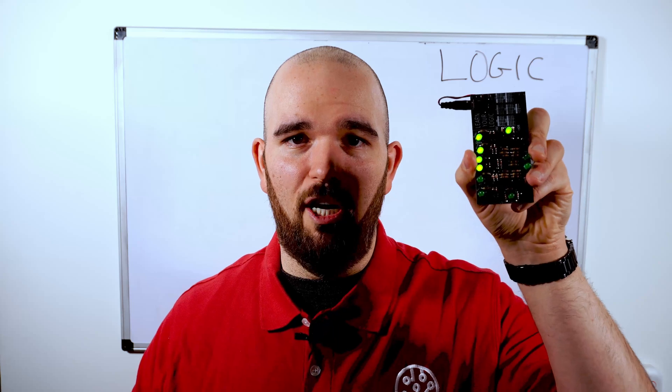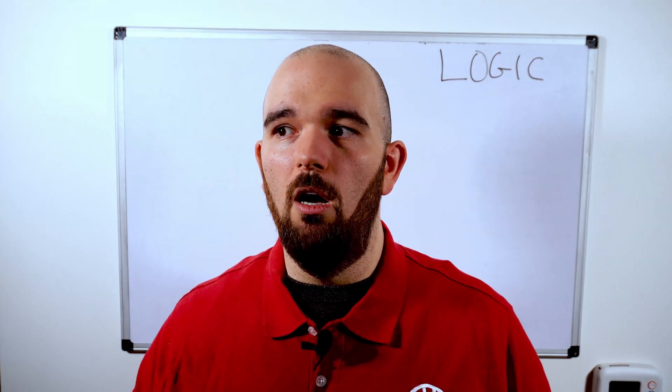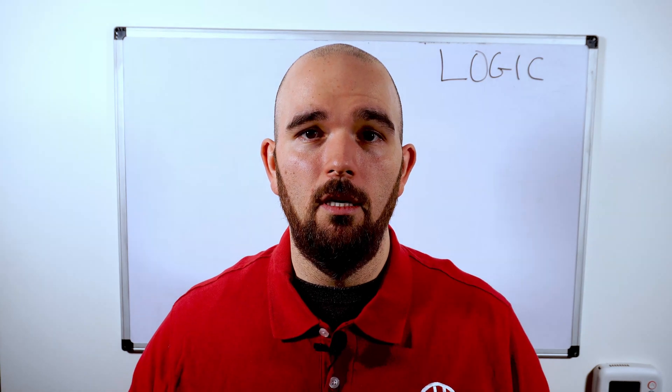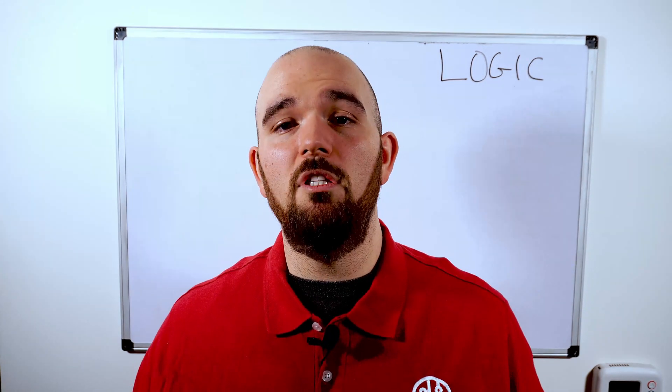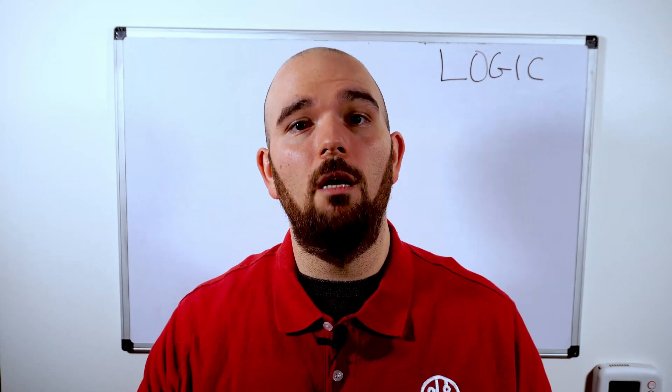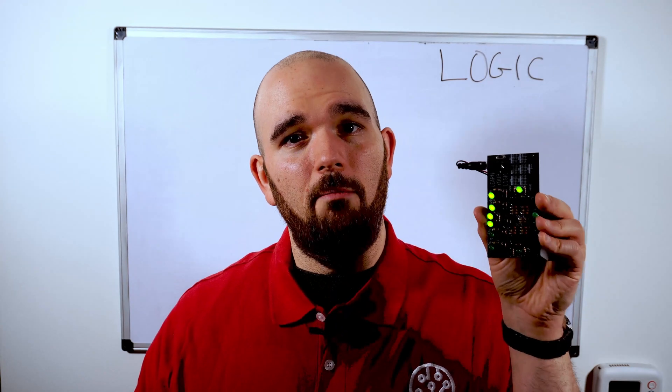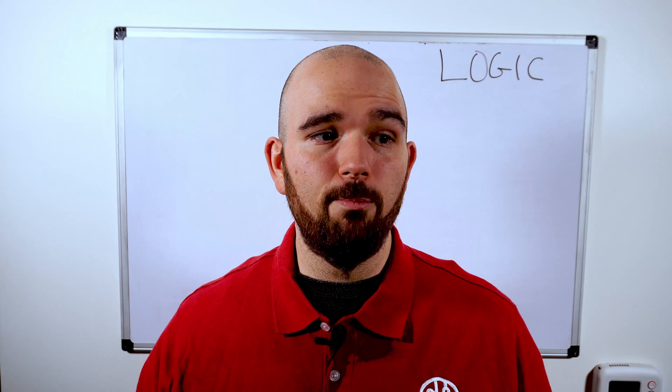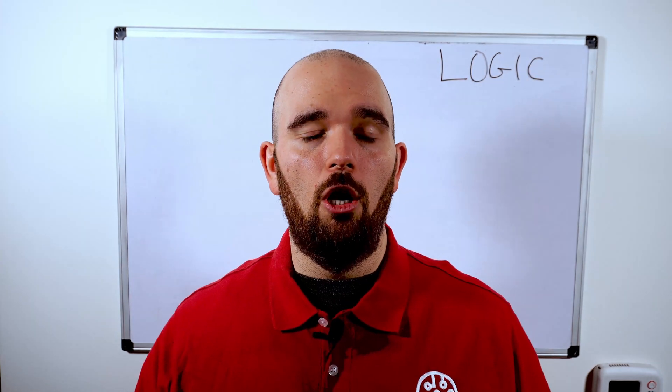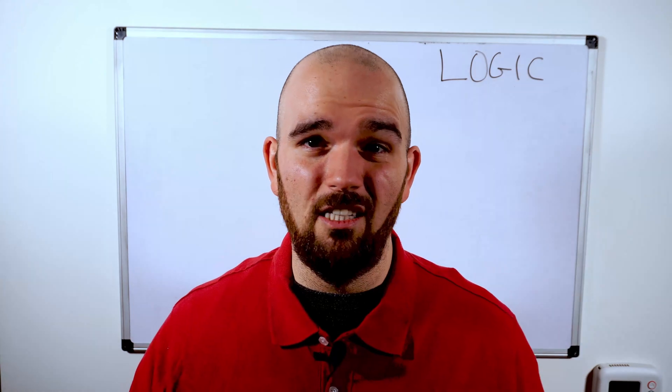We've built eight logic gates here. Multiply that by about a hundred million, and you get a modern microprocessor. But a lot of what's going on inside of your computer really comes down to logic gates. So if you understand them here, you can start to see how it scales out. It's pretty remarkable how our entire modern society is built on these very basic concepts.